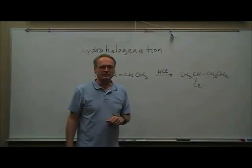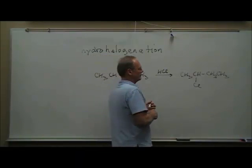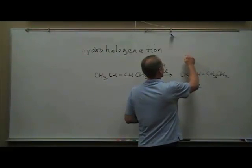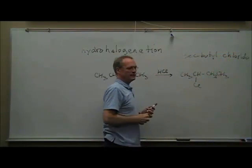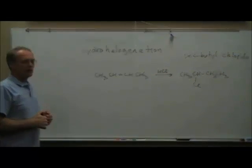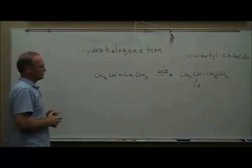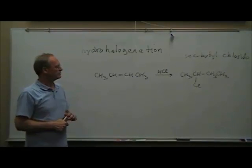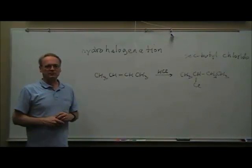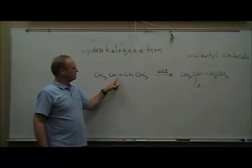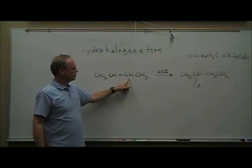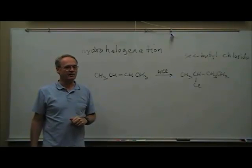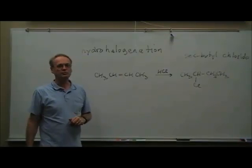The name of that compound is sec-butyl chloride. One detail you may have noticed is that the two carbons of this particular alkene are the same as each other, so it doesn't matter whether we put the hydrogen here and chlorine here or vice versa. Some of you may have put the chlorine on one side and the hydrogen on the other, which is fine because it's the same product — it's still sec-butyl chloride. But that won't always be the case.